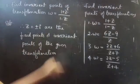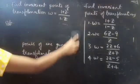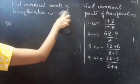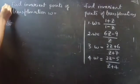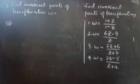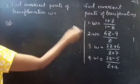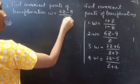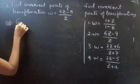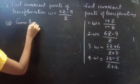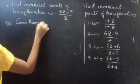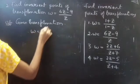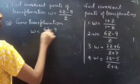Second problem: find the invariant points of the transformation omega equals to 6z minus 9 by z.